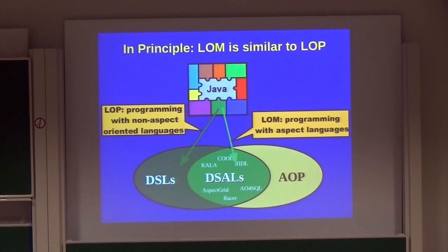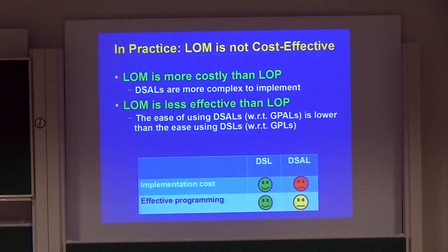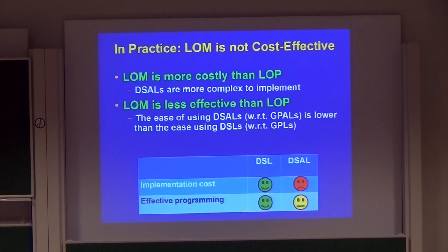In principle, LOM is similar to LOP. In both, we use a middle-out process, and we end up having software written in many different languages. The only difference is that in LOM these languages are aspect-oriented. But this difference has high impact on the practicality of LOM. LOM is more costly than LOP because DSALs are harder to implement, and LOM is less cost-effective because the benefit from using a DSAL rather than a general-purpose language is lower than expected.